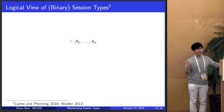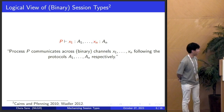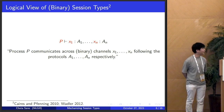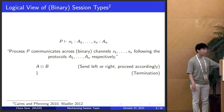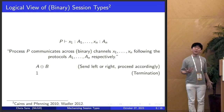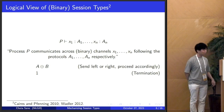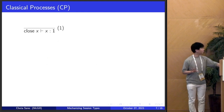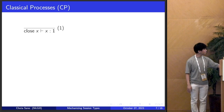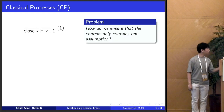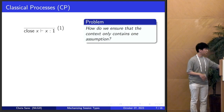We can take a classical linear logic sequent, label the assumptions, and assign a proof term — that gives a type judgment for a process. Process P communicates across binary channels x1 to xn following protocols a1 to an respectively. There are type constructors: 'a plus b' is internal choice, where the process sends an in-left or in-right signal and proceeds as type a or b; and unit type 1 corresponds to termination. A process can close if it only has an assumption x of type 1, which requires a context operation to ensure the context doesn't have other things.